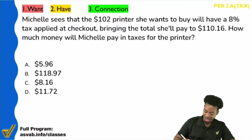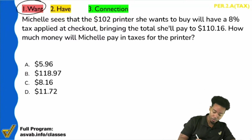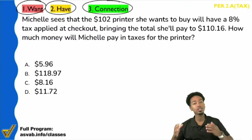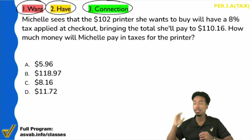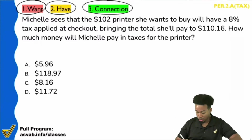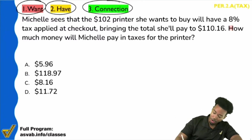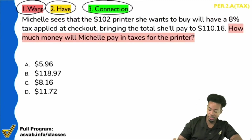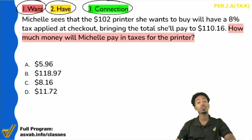I'm going to highlight this in every class moving forward. Steps one, two, and three are always going to be shown right at the top in these classes. So step one: read the question. How much money will Michelle pay in taxes for the printer?